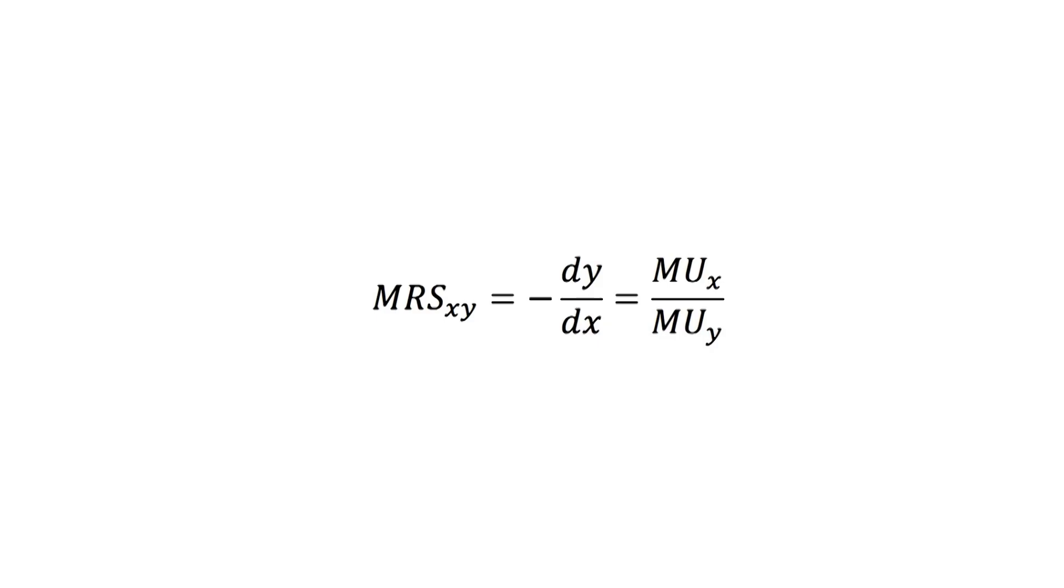It is worth mentioning that we can also obtain the marginal rate of substitution using partial differentiation and expressing it in terms of marginal utility of each good. Nevertheless, for simplicity's sake, it is common to note this formula in its absolute value form.